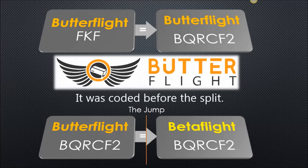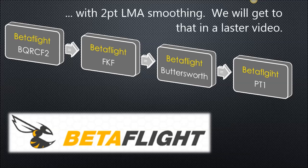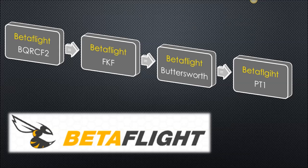As far as I'm aware, the Butterflight guys didn't change the filter at all, and I know the Betaflight guys didn't. Once we go into Betaflight and look at those logs, we're going to show that the BQRC-F2 filter produces the same result as the FKF filter in Betaflight, which produces the same result as the Butterworth filter, which produces the same result as the classic PT-1. The Butterworth filter was in test trials for the last couple months in the Betaflight 3.4 release — it actually got removed because all these filters are just producing the same result as a classic PT-1, so adding all kinds of code that produces the same result just confuses people.